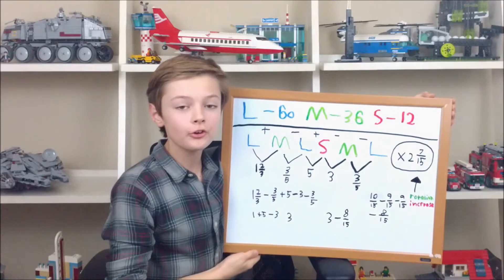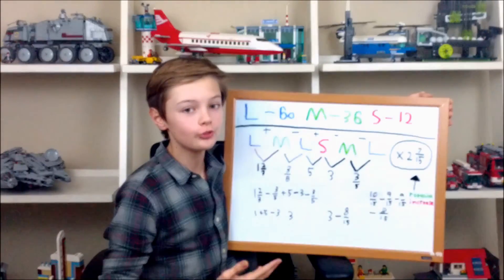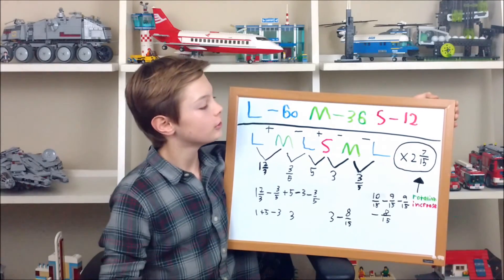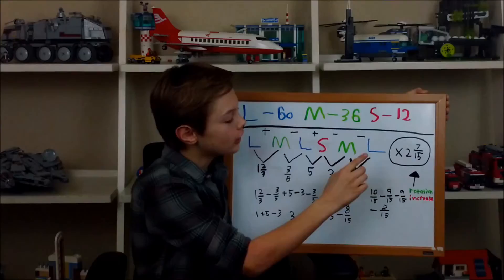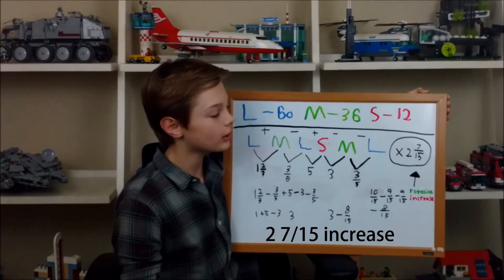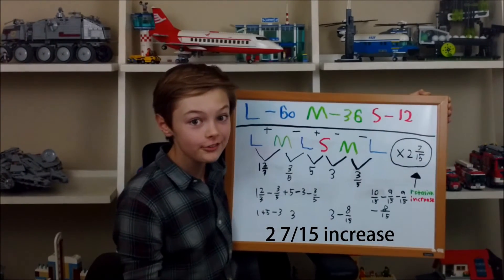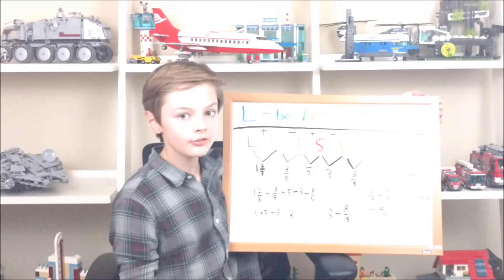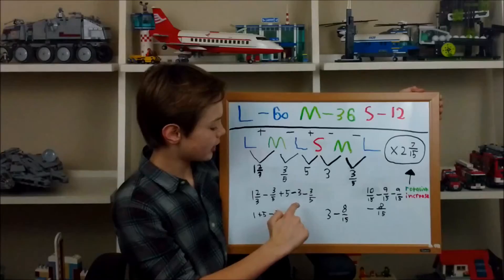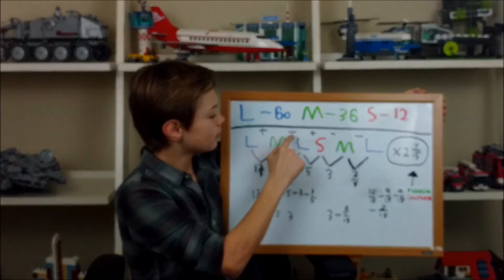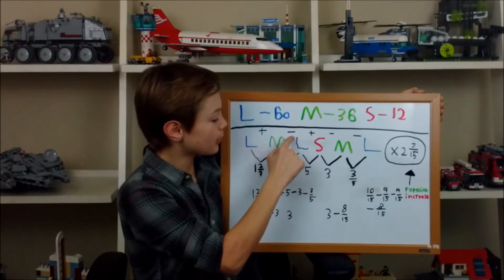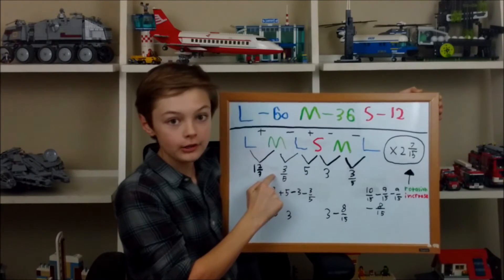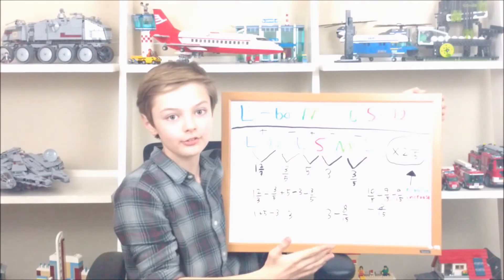After you do the math, you'll eventually get a 2 and 7/15 increase of rotation. All you have to do is take that, bring down the plus or minus sign, put it in front, and simplify from there.